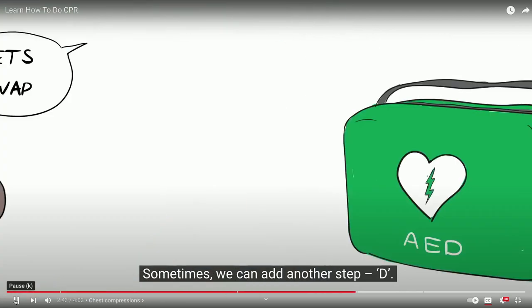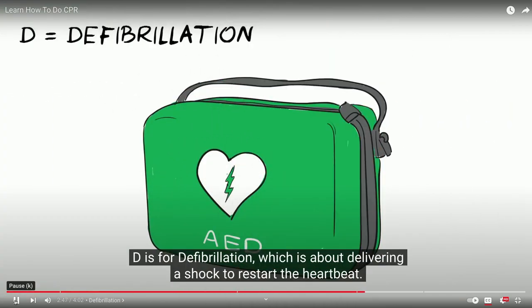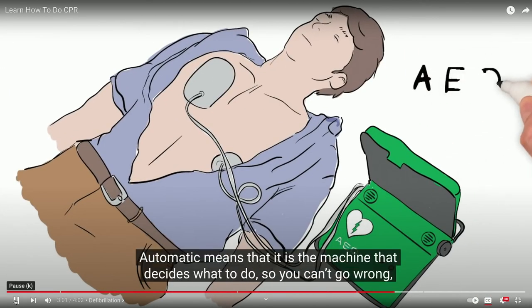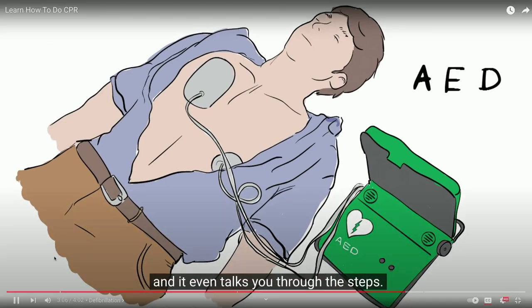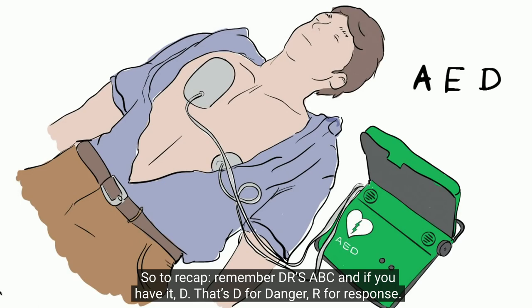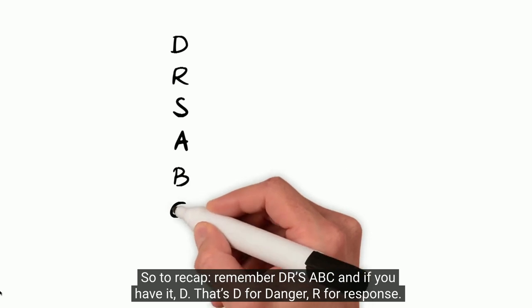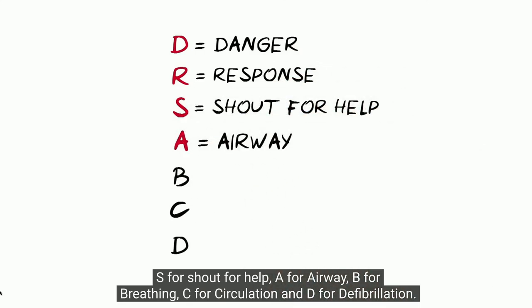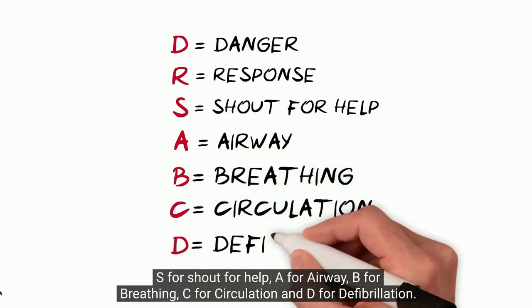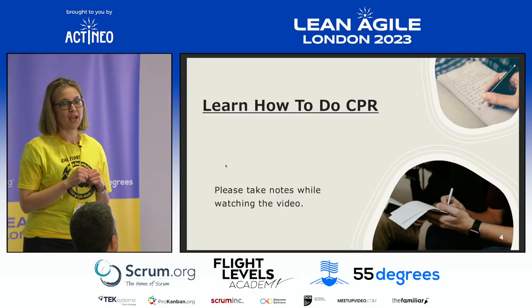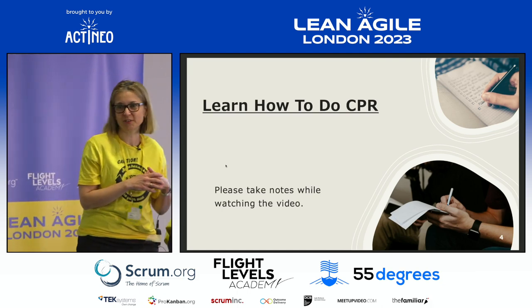Don't stop until either a health professional takes over or the person is definitely breathing normally. Sometimes we can add another step — D is for Defibrillation, which is about delivering a shock to restart the heartbeat. Some public areas and workplaces have an easy-to-use defibrillator on site called an Automatic External Defibrillator or AED. The machine decides what to do and talks you through the steps. If no AED is available, keep going with CPR until the ambulance arrives. To recap: D for Danger, R for Response, S Shout for help, A for Airway, B for Breathing, C for Circulation, D for Defibrillation.